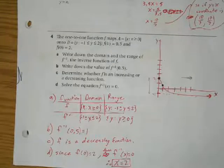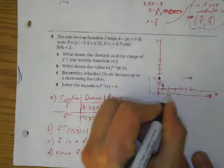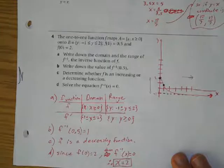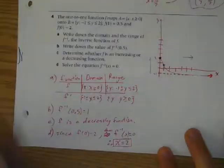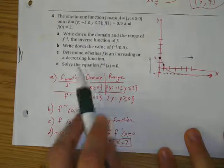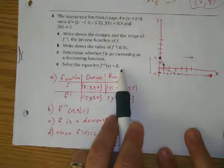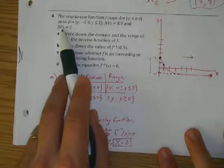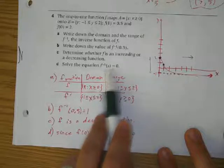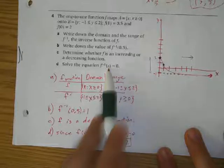Because the graph is going downward as x increases, it's a decreasing function. For the inverse of 0: on the original function, when x = 0 the output is 2, so on the inverse function when the output is 0, the input is 2.